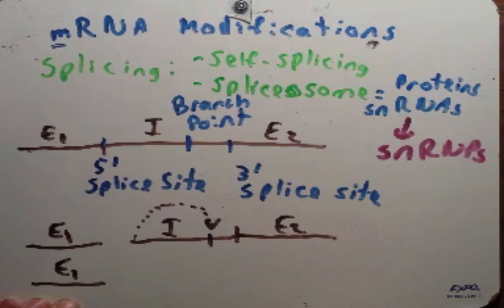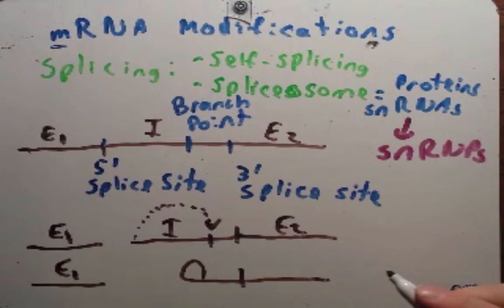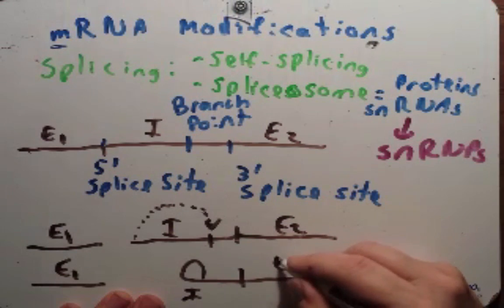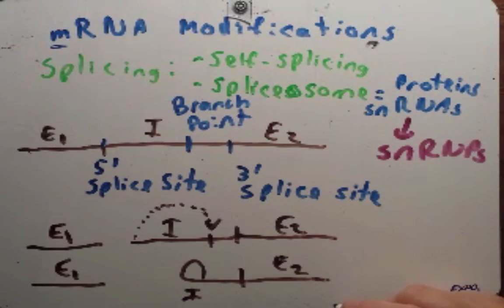And what forms then is what we call a lariat, kind of like the lasso that you might see in a western. So this intron forms a lariat. Here's our exon 2. Next thing that happens is this 3' splice site is cleaved, and this lariat that contains the intron is degraded.